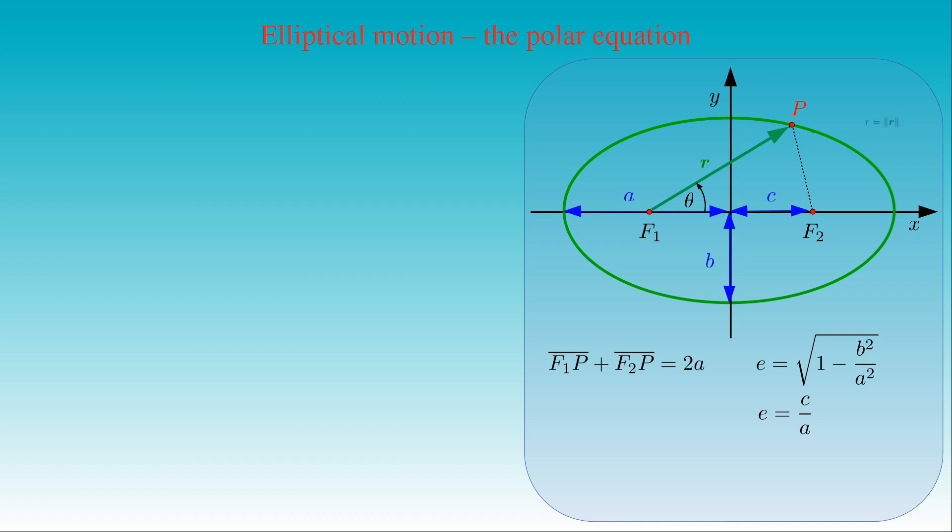The length of the position vector is denoted by R, which is equal to the distance F1P. Then the distance F2P is simply 2 times A minus R.